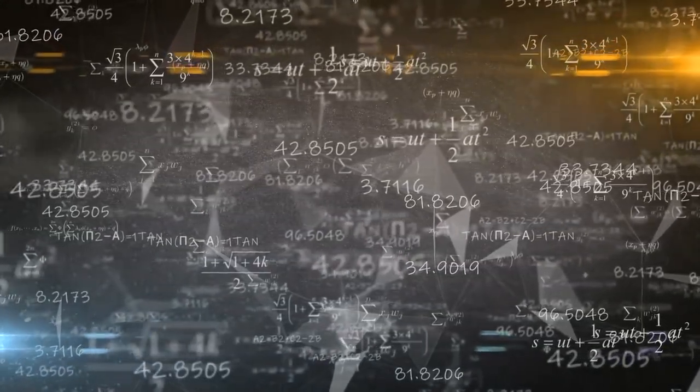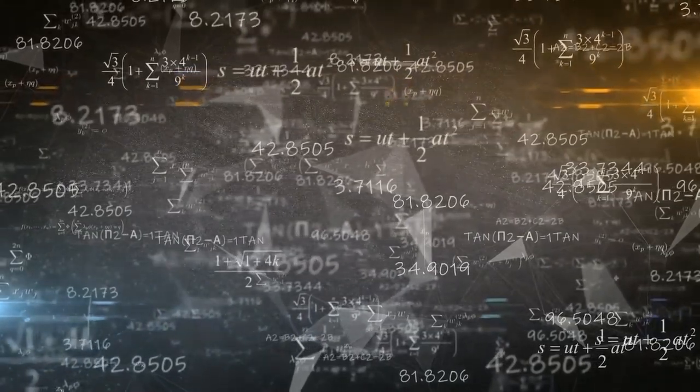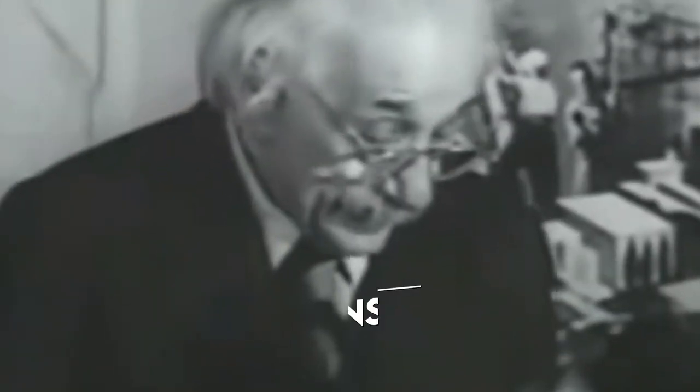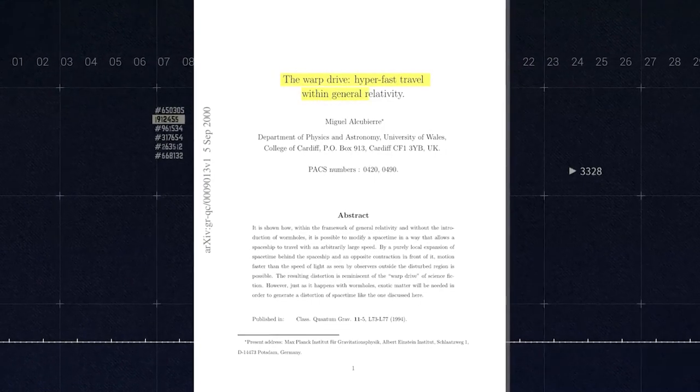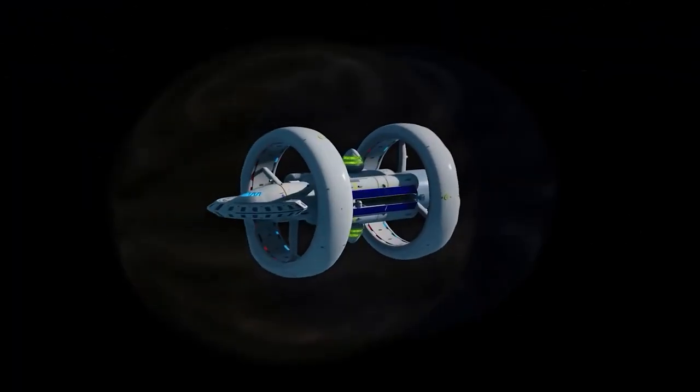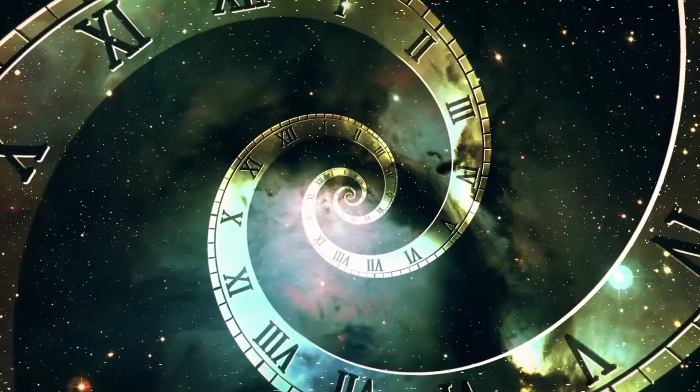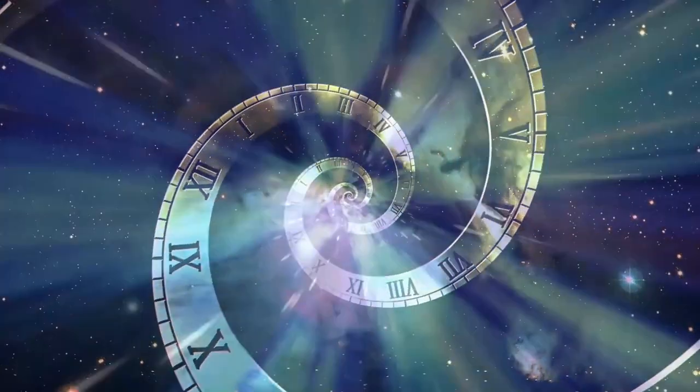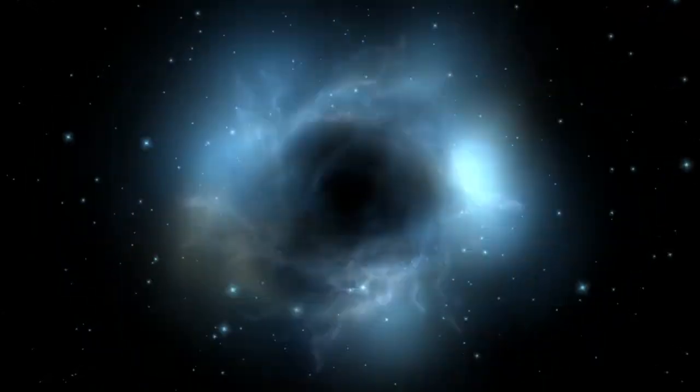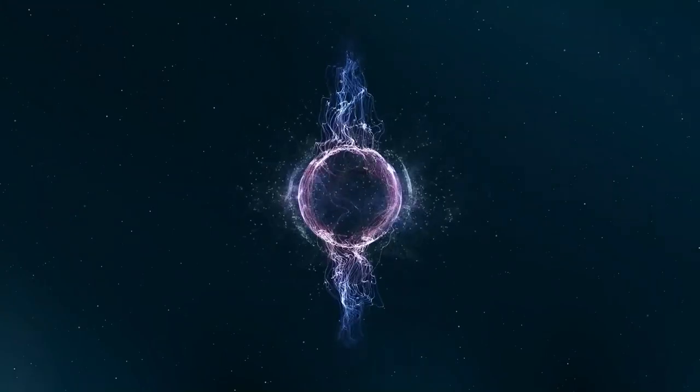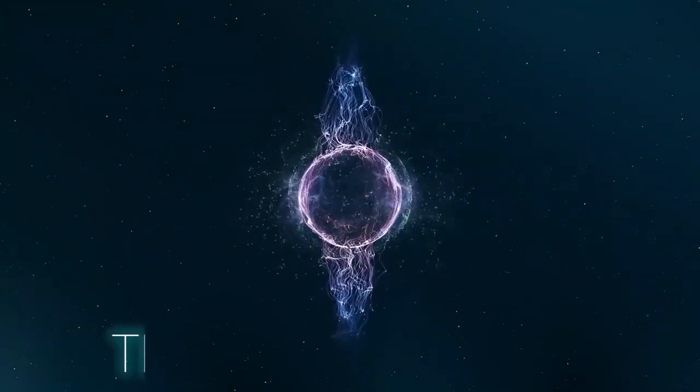When we look at Einstein's theories, energy must be a positive number. According to Einstein's formula E equals mc squared, the concept of negative energy could not exist. However, developments in quantum theory have shown us that energy could have a negative value. Energy has a negative value on some rare occasions. One of the examples of negative energy is the Casimir effect.